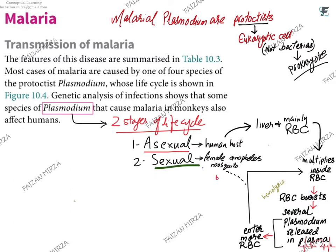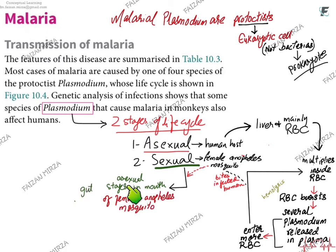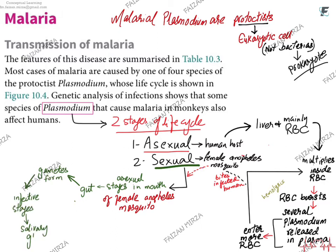The sexual cycle of this pathogen occurs in the female Anopheles mosquito as it bites a human who is harboring the pathogen. The asexual stages are passed to the mouthparts of the female Anopheles mosquito as it feeds on the blood of this individual. These pathogens move to the mosquito's gut, where they form gametes. The gametes fuse and form infective stages, which travel to the salivary glands and are present in the proboscis. The next time this insect bites a new person not suffering from malaria, it transfers these pathogens into that new host.